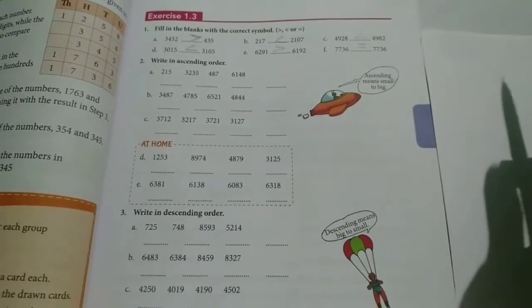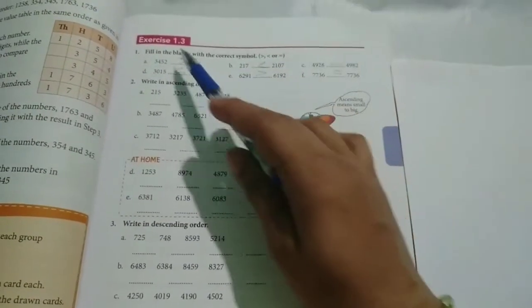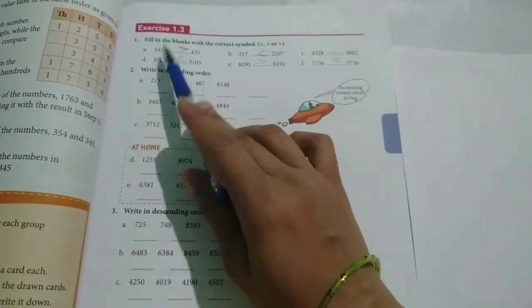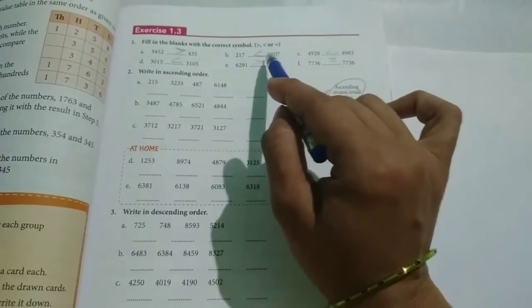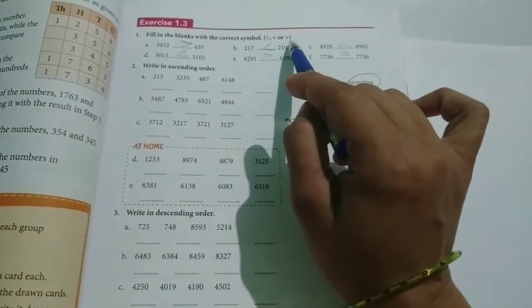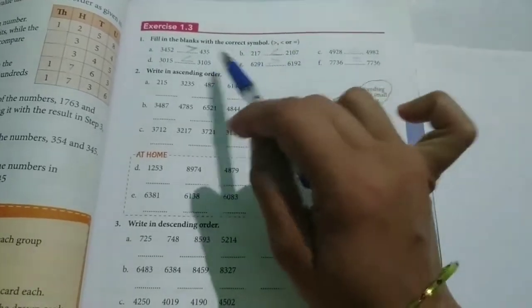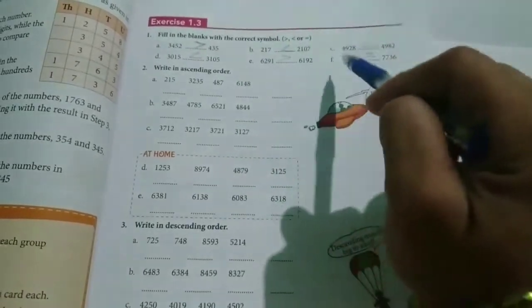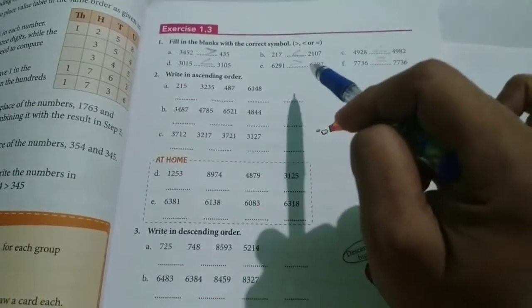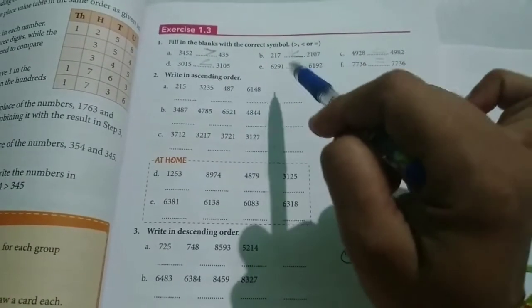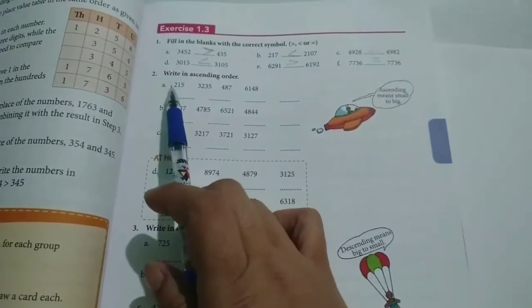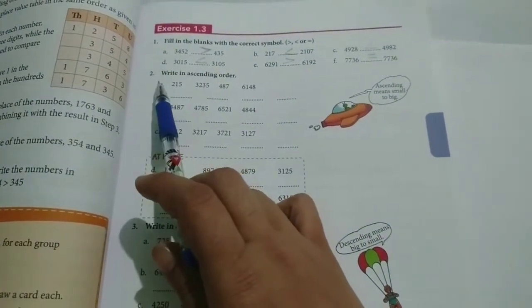Dear third standard students, in the previous class we discussed Exercise 1.3 first main. How to put the greater than symbol, less than symbol, or equal symbol, I had explained you. I think you have completed the notes also. So now, today let us discuss about second main.